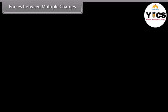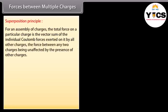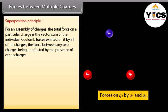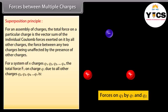Forces between multiple charges — Superposition principle: For an assembly of charges, the total force on a particular charge is the vector sum of the individual Coulomb forces exerted on it by all other charges, the force between any two charges being unaffected by the presence of others. For a system of n charges q₁, q₂, q₃, ..., qₙ, the total force F₁ on charge q₁ is F₁ = F₁₂ + F₁₃ + F₁₄ + ... + F₁ₙ.